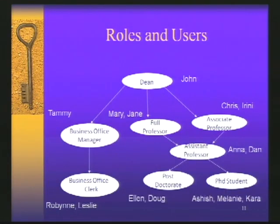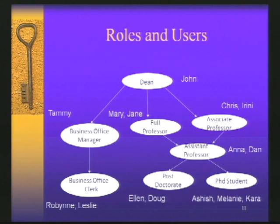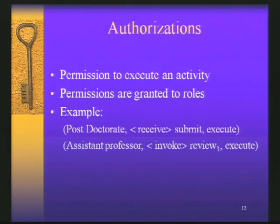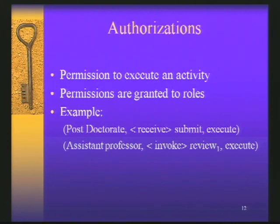This is an example of a role hierarchy associated with the submission process. Each node represents a role in the hierarchy. On top of the hierarchy we have the dean. Since the process is deployed in an academic institution, all roles reflect positions in an academic institution: full professor, associate professor, PhD student, and so on. Beside each node you can see the users that can be assigned to the corresponding role. Authorizations are represented as the permission to execute a certain action on an activity — we consider only the execution action — and permissions are granted to roles. For example, the role of assistant professor is granted execution of the invoke review operation.